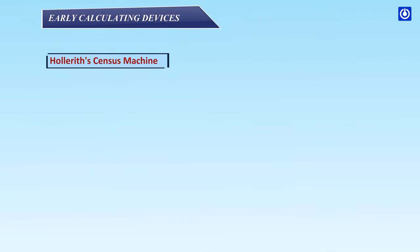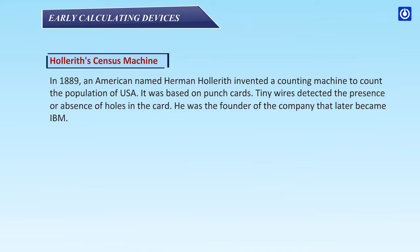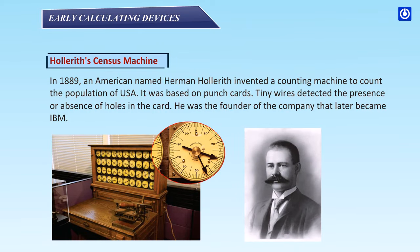Hollerith's Counting Machine: In 1889, an American named Herman Hollerith invented a counting machine to count the population of the USA. It was based on punched cards. Tiny wires detected the presence or absence of holes in the card. He was the founder of the company that later became IBM.